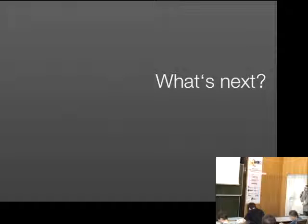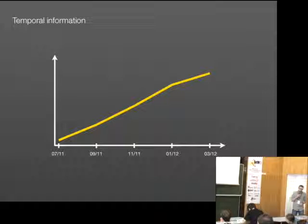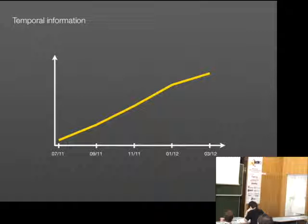What have we planned? First, we want to include temporal information. For each cell we want to show how the single attributes evolve over time. We have planned to do the calculation every two months and then depict how these single values evolved.